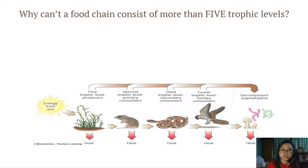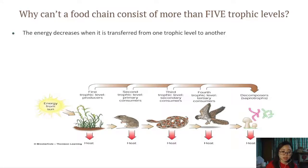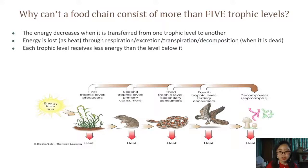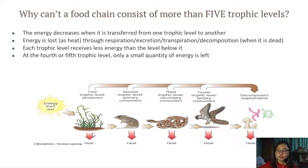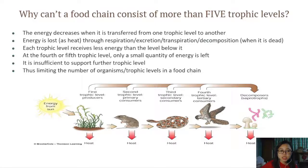The reason why we can't have a food chain with more than 5 trophic levels is because energy decreases when it is transferred from one trophic level to another. It's not 100% going to the next trophic level — energy is lost as heat through respiration, excretion, transpiration, and decomposition when the organism dies. So each trophic level will receive less energy than the level below it. At the 4th or 5th trophic level, only a small quantity of energy will be left, which is not sufficient to support another trophic level, thus limiting the number of trophic levels in a food chain.